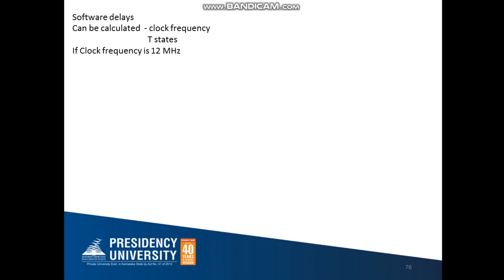If I know the clock frequency, from this I can calculate the clock period by using the formula T = 1/F, where F is my clock frequency. So in this case, since I have taken the processor to be a 12 MHz microprocessor, the clock period will be equal to 1/12 MHz, which is equal to 0.083 microseconds.